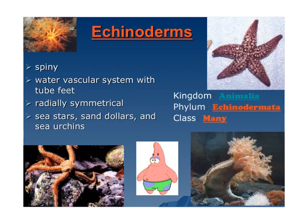Echinoderms means spiny skin. When you see 'echino,' that means spiny, and 'derm,' like a dermatologist, means skin. So these are our spiny-skinned animals like sea stars, sand dollars, and sea urchins. They have a water vascular system with tube feet. Their symmetry is radial — see how the top is round, so it has radial symmetry.